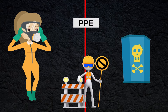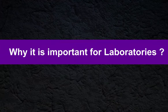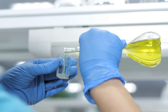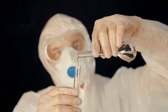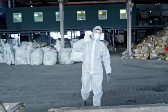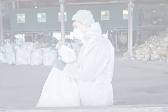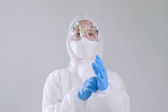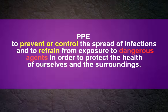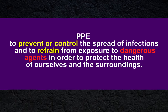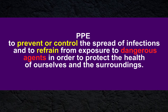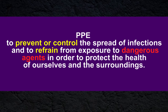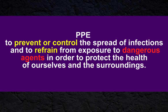Why is it important for laboratories? Medical laboratories are full of dangerous and hazardous agents, including toxic chemicals, radiations, sharps, biological infectious materials and agents. Therefore, we use personal protective equipment to prevent or control the spread of infections and to refrain from exposure to dangerous agents, in order to protect the health of ourselves and the surroundings.